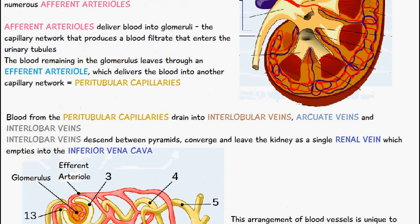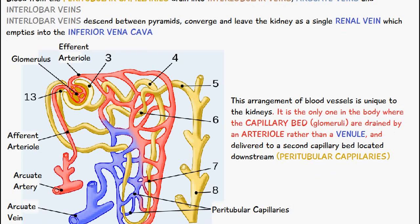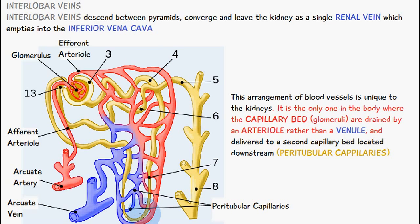Let's move on to this diagram because I think it will help you understand it. Here's the arcuate artery, which branches into the interlobular artery and then into the afferent arteriole, which provides blood supply to the capillary bed or glomerulus. Then through the efferent arteriole, blood is provided to the peritubular capillaries, which you can see in these regions here.